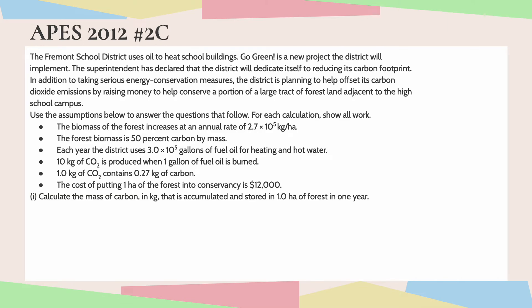Welcome back. Please take a second to go ahead and read through the question and the given information and then come back and join me. So I'm just going to give you a super quick summary. Basically, a school district is trying to offset its carbon dioxide emissions by raising money to help conserve a portion of forest land that is nearby to the high school campus. So jumping right into the questions: